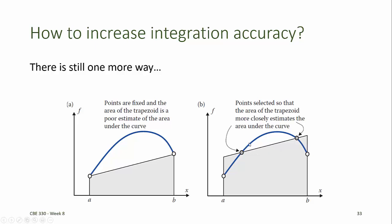That is, the space here that is between the blue curve and the line representing the trapezoid is made up for by the space that's above the curve near the endpoints in this particular example.